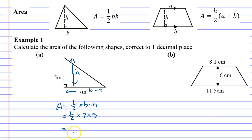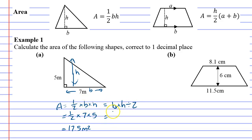We get 17.5 meters squared. I also want to show you that when you do the area of a triangle, you can change the formula. Instead of half times B times H, you can go B times H divided by 2. Dividing by 2 and multiplying by a half is the same thing — you'd get the exact same solution: 17.5 meters squared.